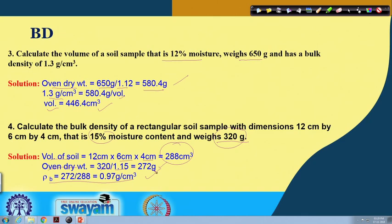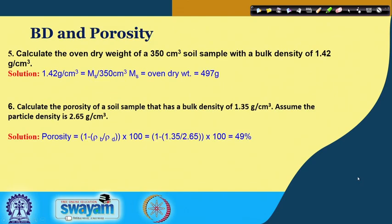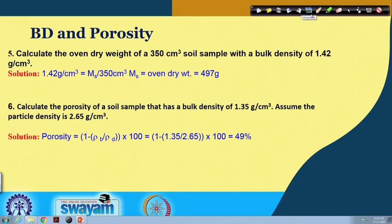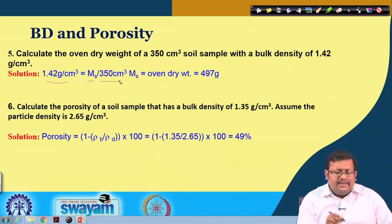The fifth problem: calculate the oven-dry weight of a 350 cubic centimeter soil sample with a bulk density of 1.42 grams per cc. We know bulk density is 1.42 grams per cc and the volume is 350 cubic centimeters. From this we can calculate the oven-dry weight: 1.42 times 350 equals 497 grams.